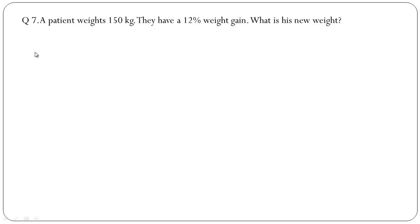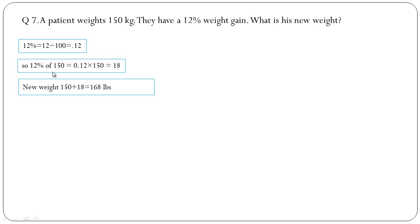Question number 7: A patient weighs 150 kg. They have 12 percent weight gain. What is the new weight? So 12 percent means 0.12. 12 percent of 150 equals 0.12 multiplied by 150, that will be 18. So new weight will be 150 plus 18 equals 168 lbs.